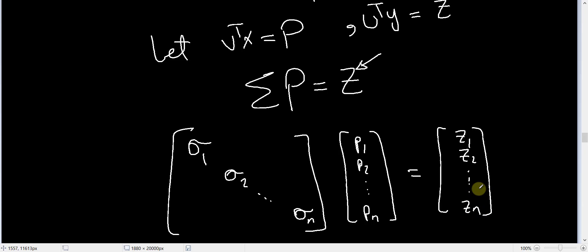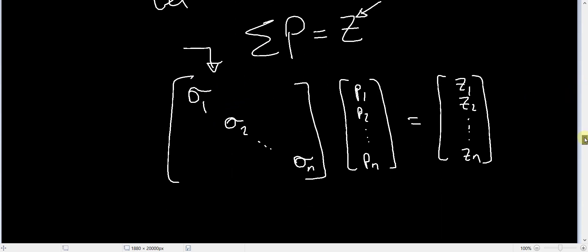So we have transformed our system of linear equations into a system involving a diagonal matrix. And actually the solution of this is very straightforward. You know that σ_N P_N is equal to Z_N.